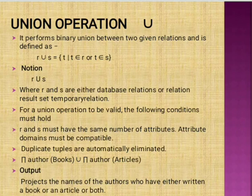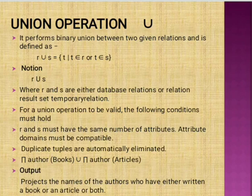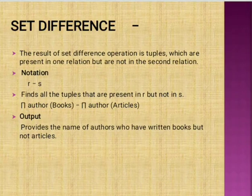Example: Projection of author from books, union projection of author from articles. Here, the author attribute is extracted from the books relation and also from the articles relation. This projects the names of authors who have written either a book or an article, or both.